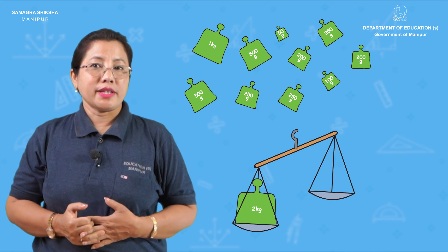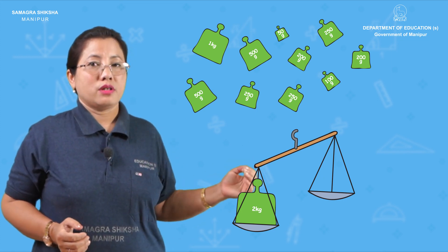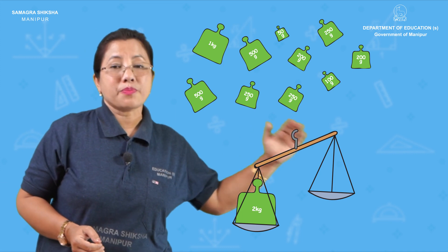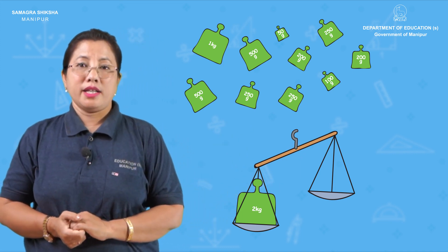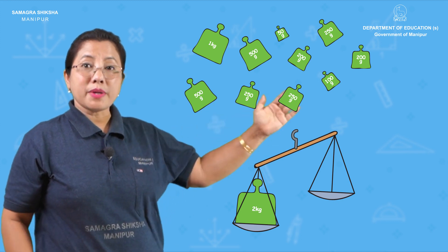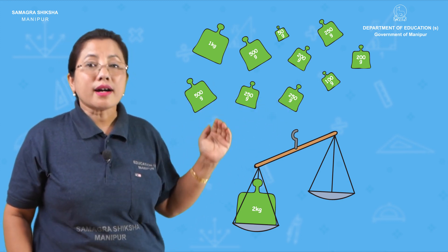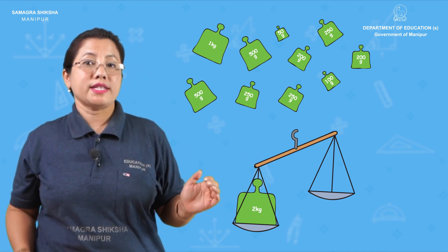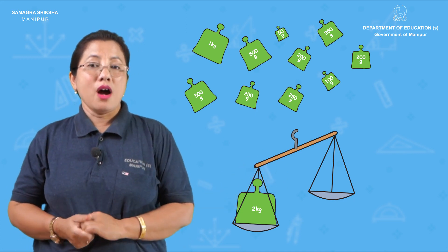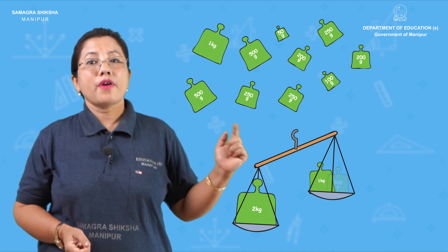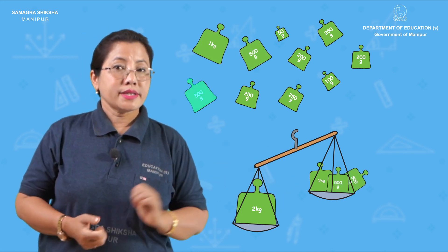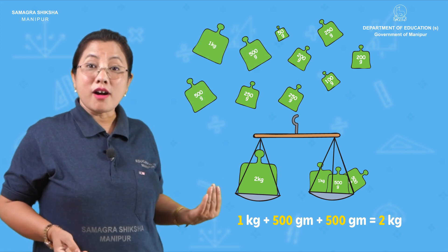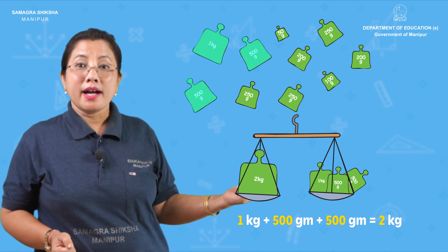We have to choose the weight equivalent to 2 kg. The balance shows 3 kg equals 1 kg on the other side, so the balance can be used to measure.